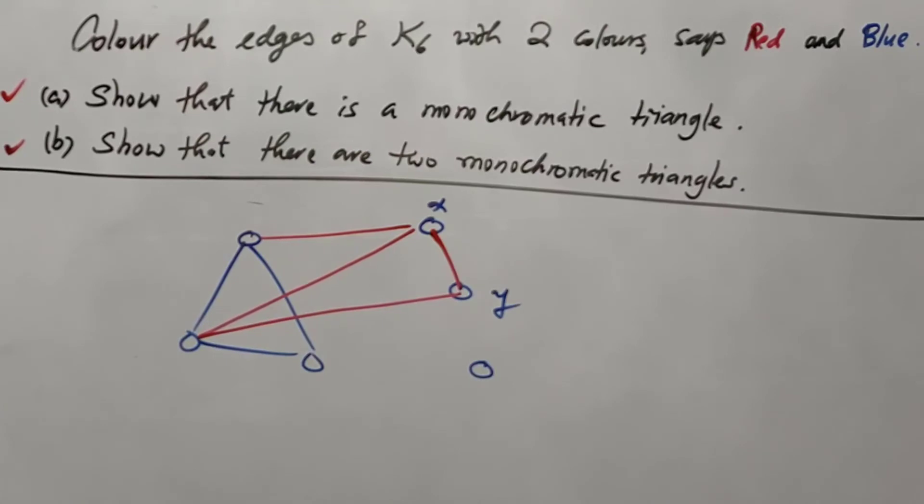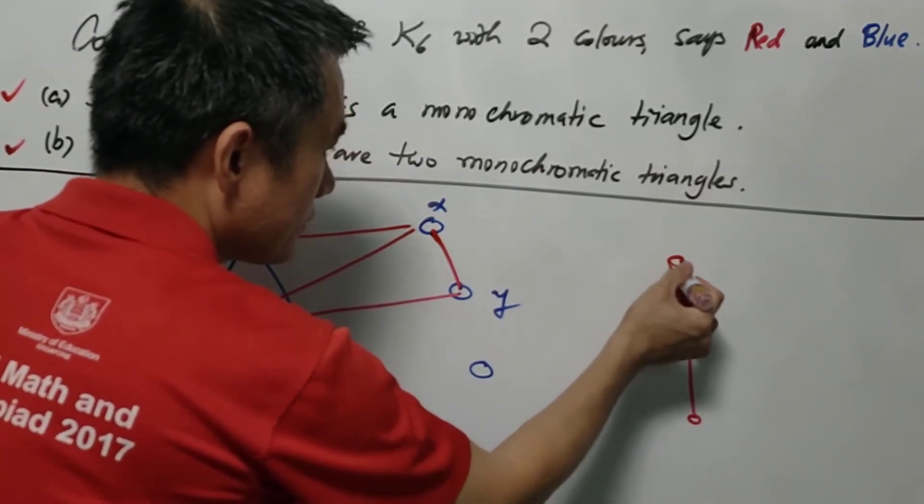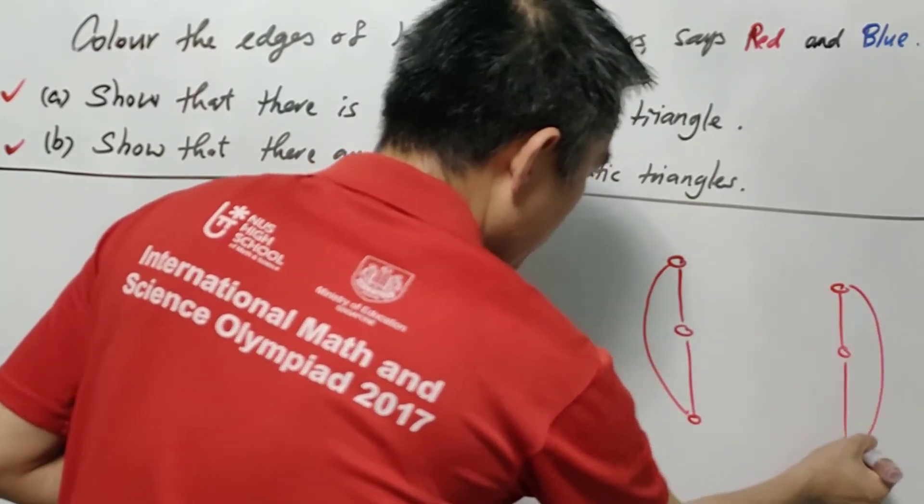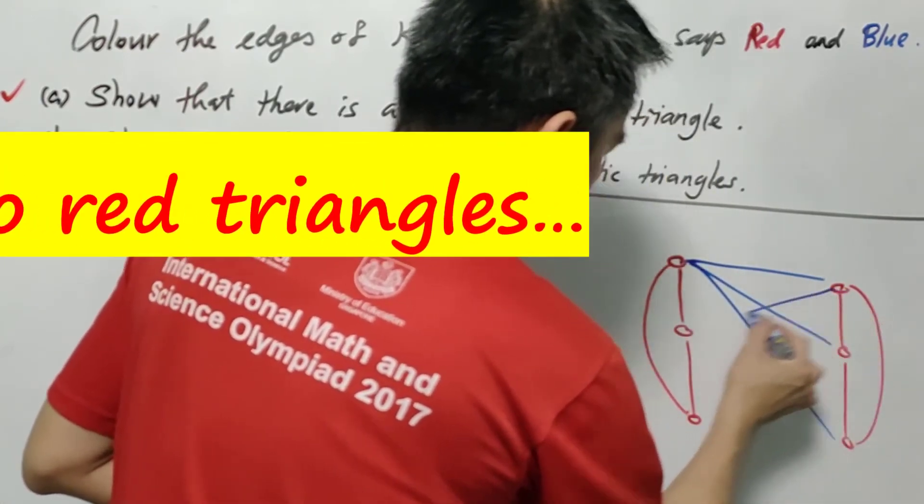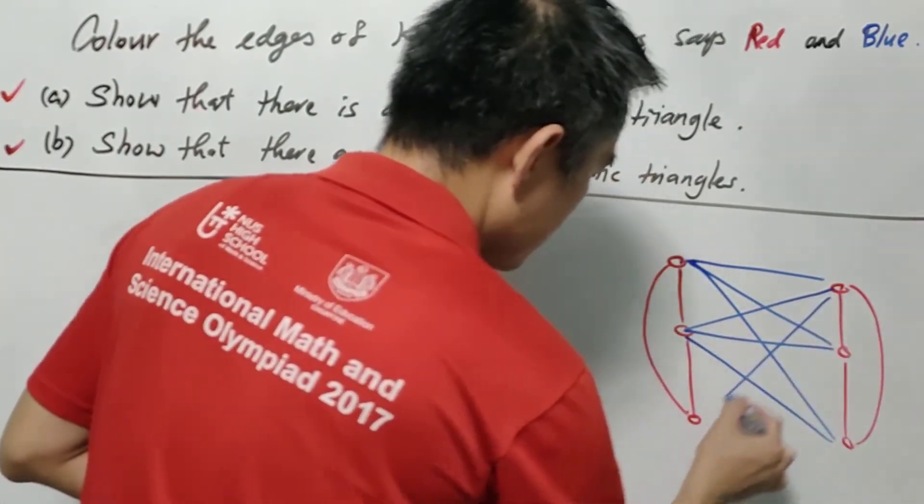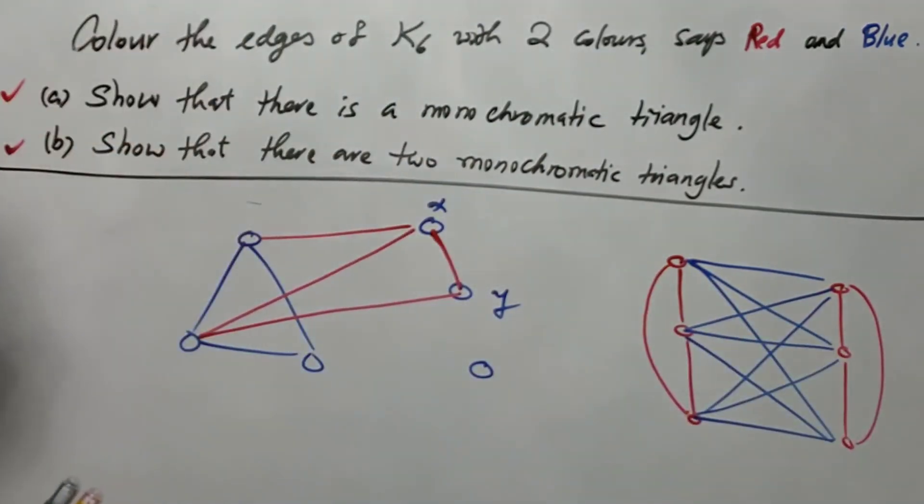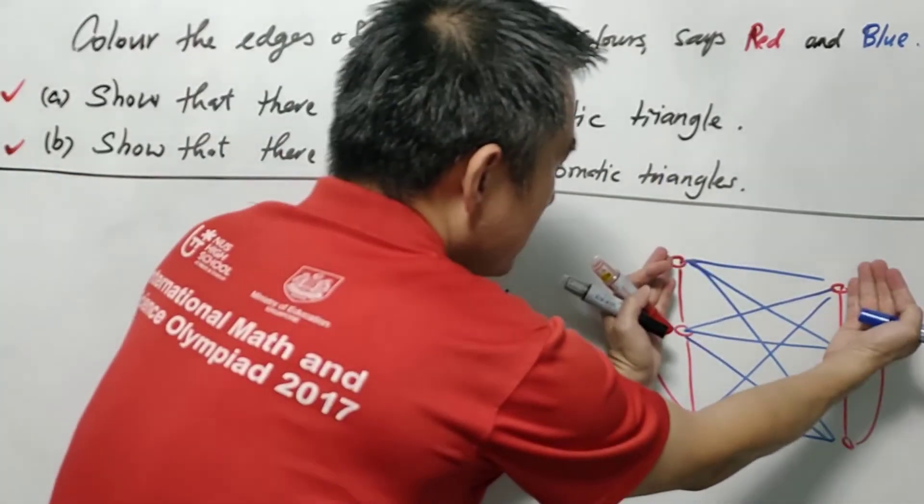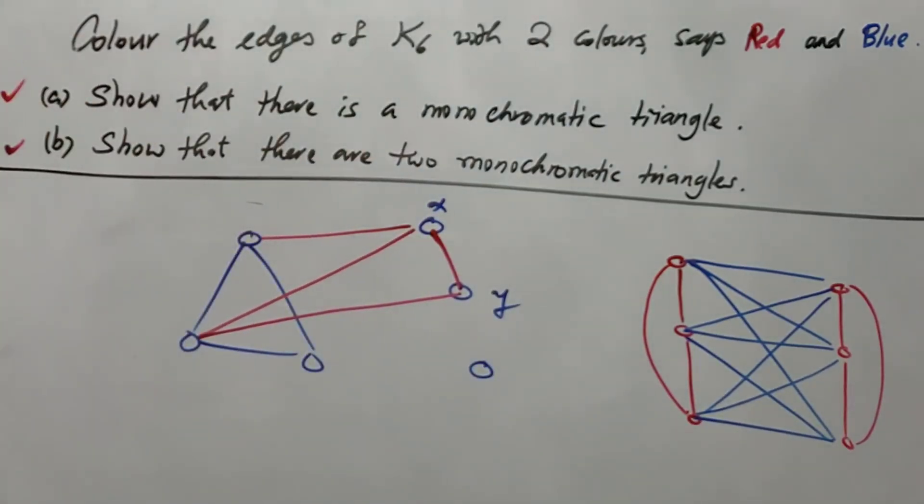The answer is two, because we are able to construct a K6 using two colors, whereby there's only two monochromatic triangles as shown. We have red triangles and the rest we are using blue color. You may check that there's exactly two red triangles and there's no any other blue triangles in between them. Because it itself is a K3,3, and we know that K3,3 contains no triangle at all.